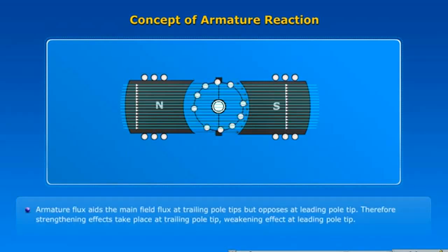Armature flux aids the main field flux at trailing pole tip but opposes at leading pole tip. Therefore, strengthening effects take place at trailing pole tip, weakening effect at leading pole tip.